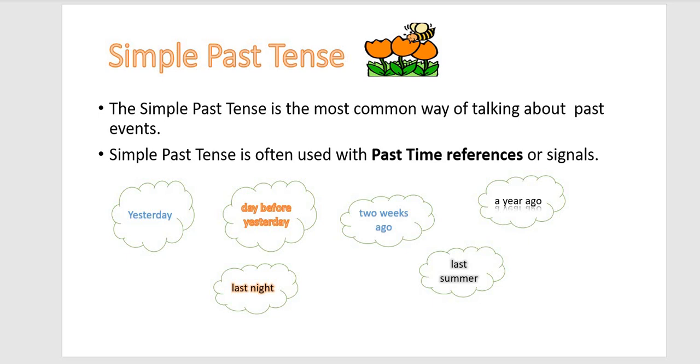The simple past tense is the most common way of talking about events that have taken place in the past. Simple past tense is often used with past time references or signals like yesterday they listen to music.